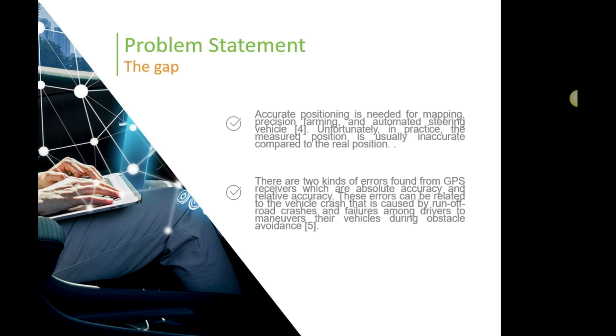There are two kinds of errors found in GPS receivers: absolute accuracy and relative accuracy. These errors can be related to vehicle crashes caused by run-off road crashes and failures among drivers to maneuver during obstacle avoidance. Some drivers steer too much and go off the road, while others don't steer enough and collide with obstacles.